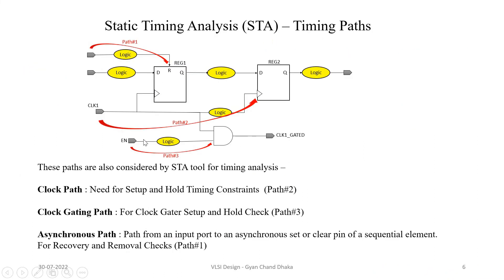The clock path is needed for setup and hold timing constraints, which are synchronous timing constraints we will study in the next chapters. The clock gating path is needed for clock gating setup and hold checks, to make sure the clock gate performs as intended. The asynchronous path — from an input port to an asynchronous set, reset, or clear pin of a sequential element — is needed to perform recovery and removal timing checks, which are asynchronous timing checks we will study in later chapters.